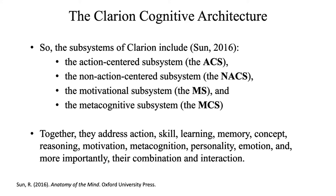Correspondingly, Clarion includes the following subsystems: the action-centered subsystem for procedural processes; the non-action-centered subsystem for declarative processes; the motivational subsystem for motivational processes; and the metacognitive subsystem for metacognitive processes. Together, they address action, skill, learning, memory, concept, reasoning, motivation, metacognition, personality, emotion, and so on. More importantly, they address the combination and interaction of these things.